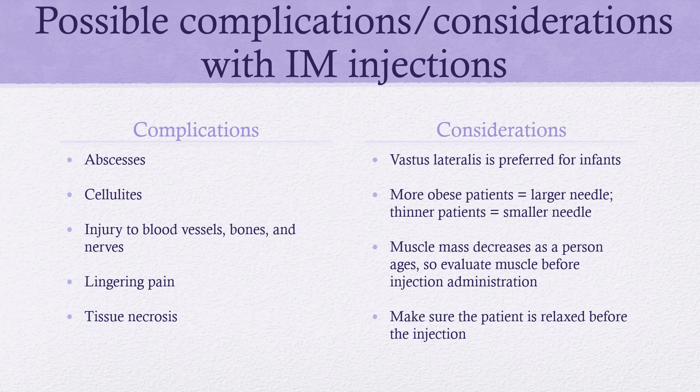Possible complications with IM injections include abscess and cellulitis, which can occur if you haven't gotten deep enough into the muscle. Considerations include using the vastus lateralis for infants, using a larger needle length for obese patients and a smaller one for thin patients. Muscle mass usually decreases as a person gets older, and always make sure the patient is relaxed before injecting the medication.